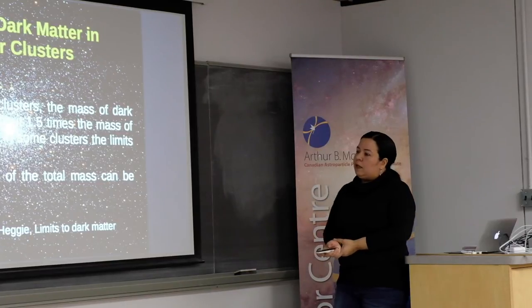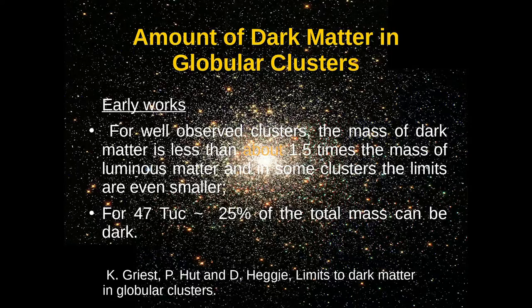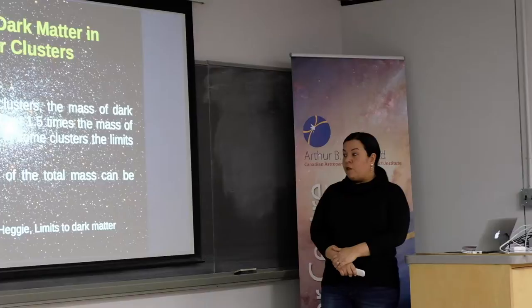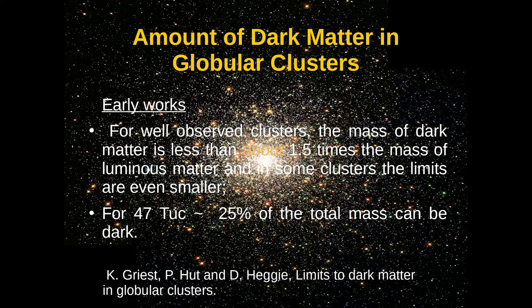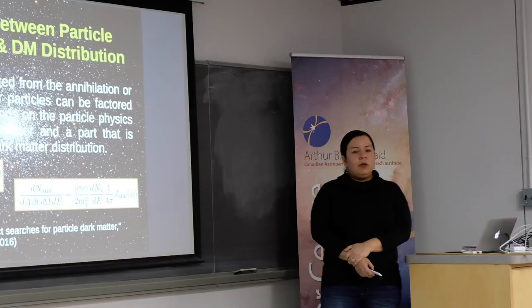What do we know about the amount of dark matter that might exist in globular clusters? Early work by King, Rist, and collaborators placed some limits on dark matter in globular clusters. They studied several clusters and concluded that at least 1.5 times the mass of the luminous matter should be dark — translating to at least 60% of the globular cluster mass being dark. For 47 Tuc specifically, they estimated that at least 25% of the total mass could be dark. These are early numbers, and we will discuss them further. It is important to connect the particle physics model with dark matter distributions in order to build the flux.